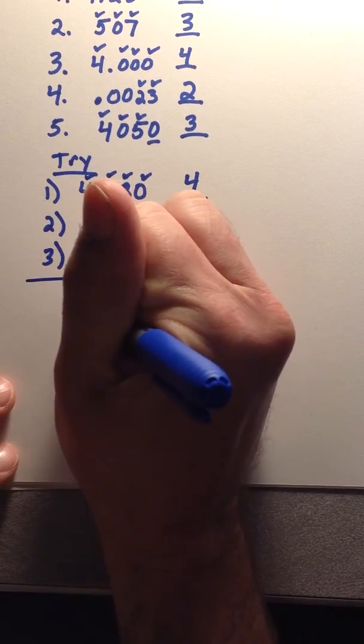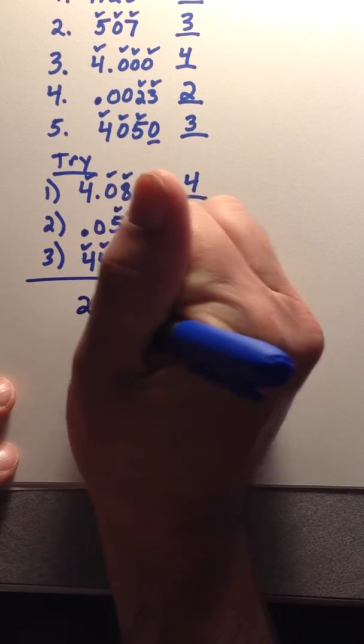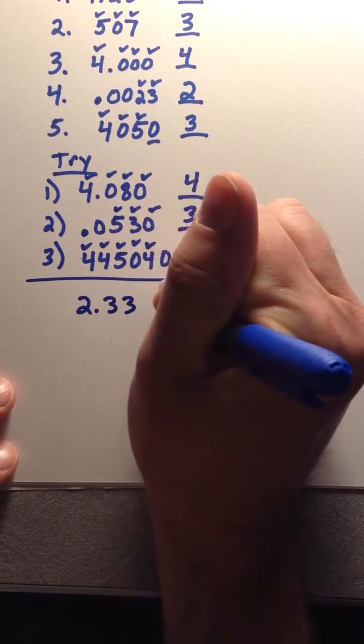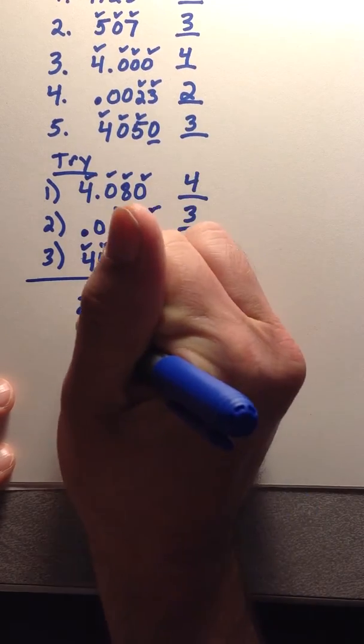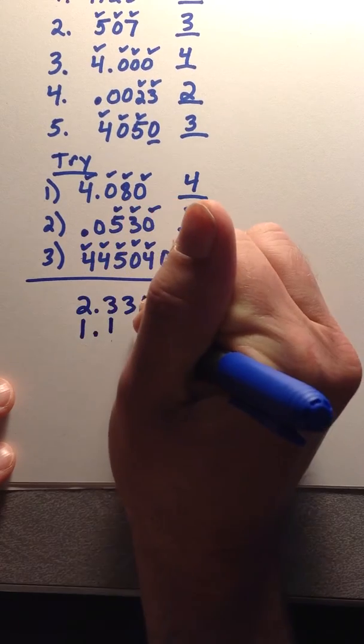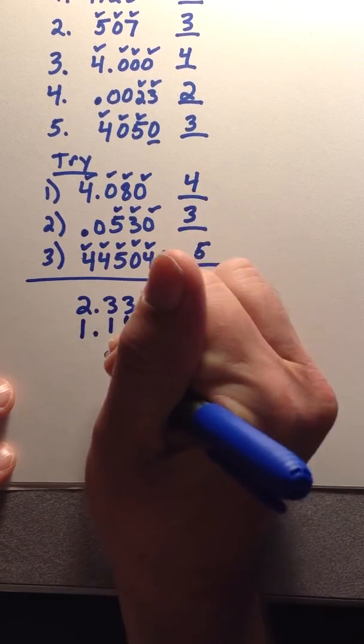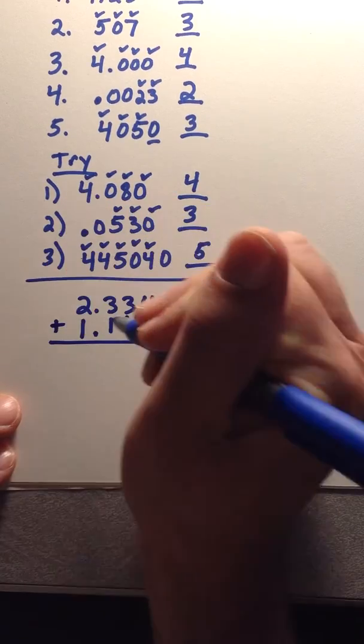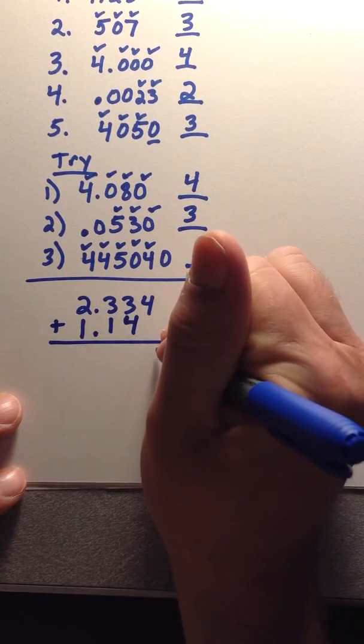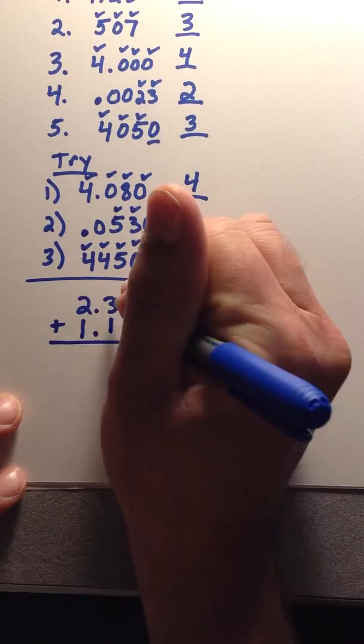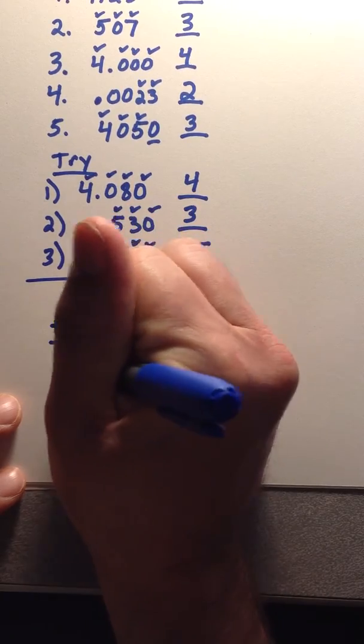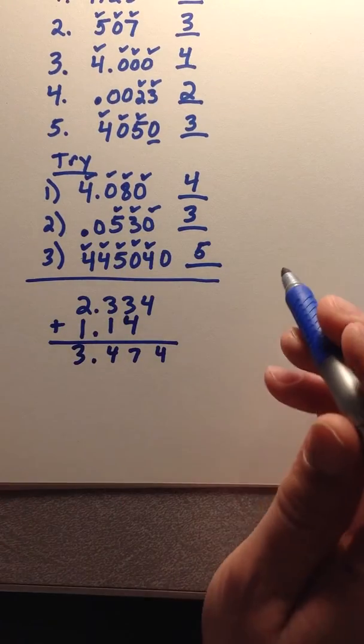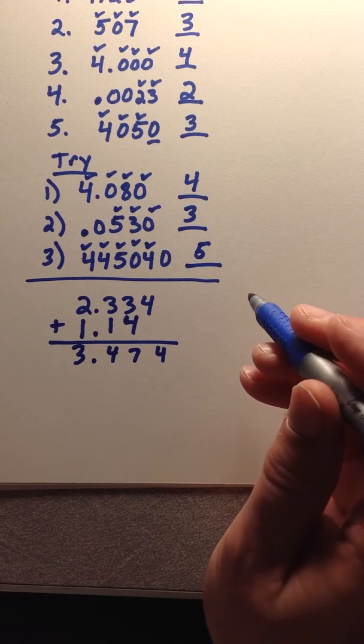Pretend we have a number such as 2.334 and a number such as 1.14. When we add those together, you would have 4, 7, 4, and 3.